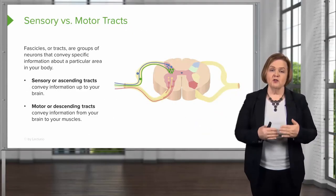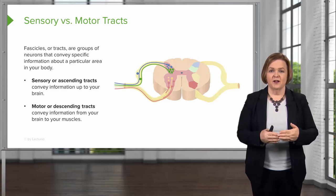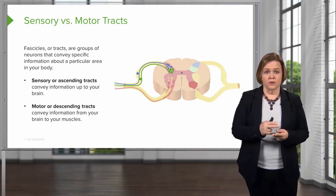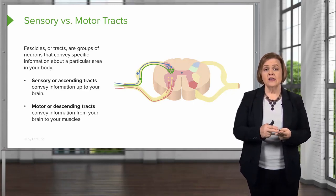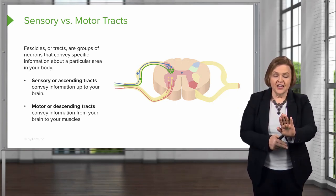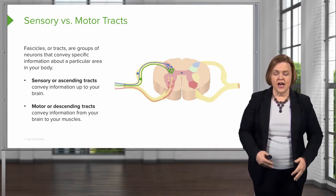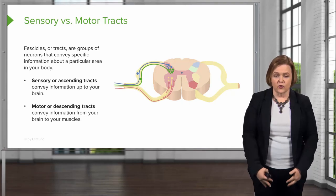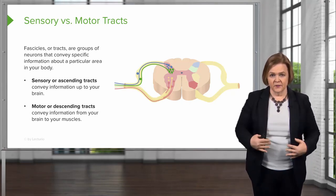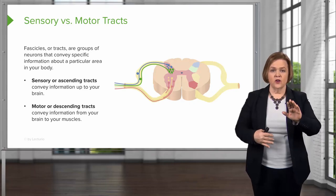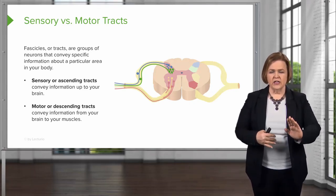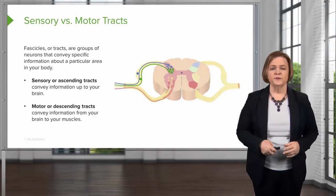This is another important step. We have two types of tracks — sensory tracks and motor tracks. So without looking at your notes, which ones ascend or move upwards, and which ones descend? Pause the video and practice that a couple of times so you have it pretty clear and solid before we move on.